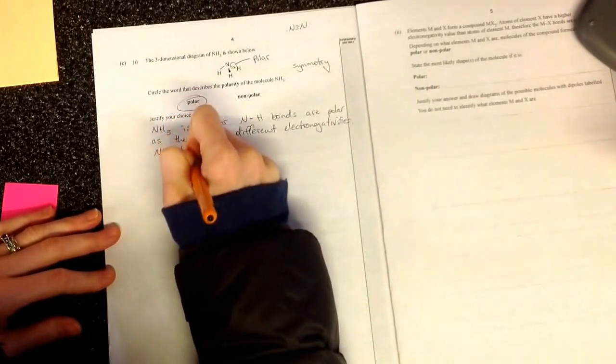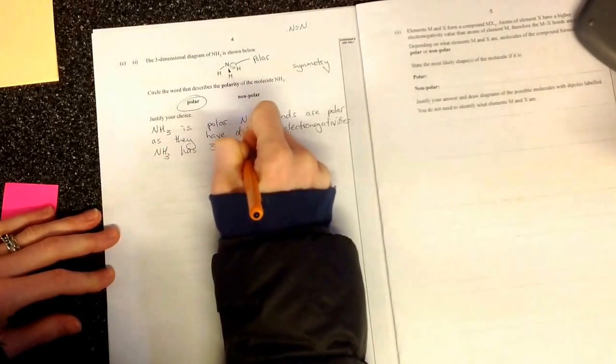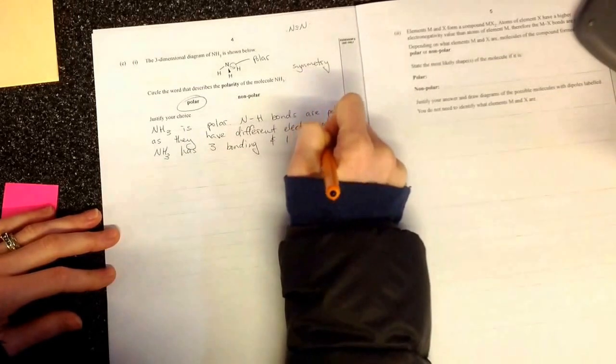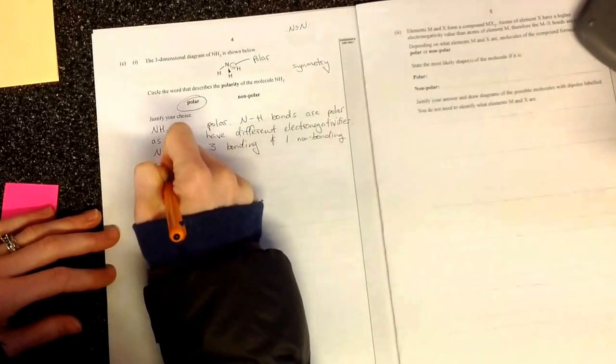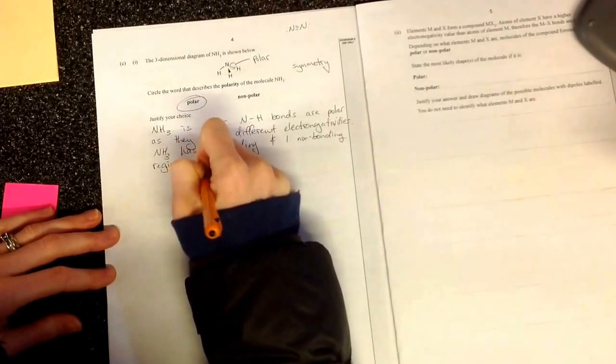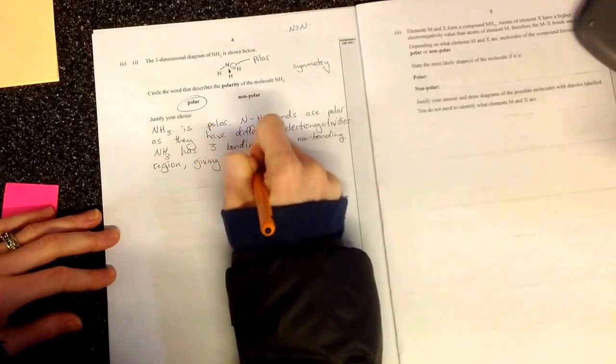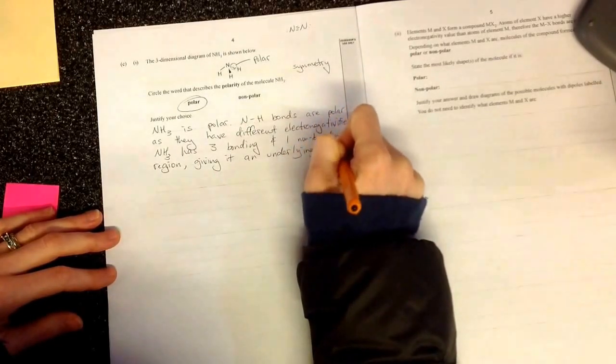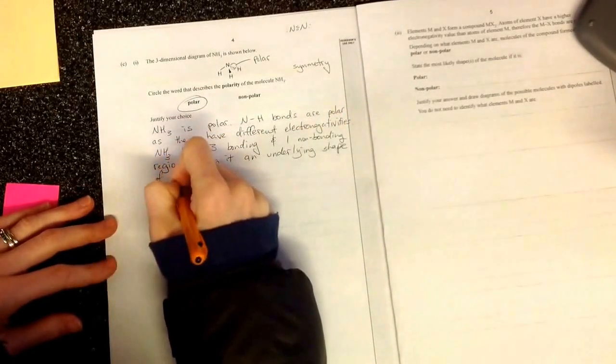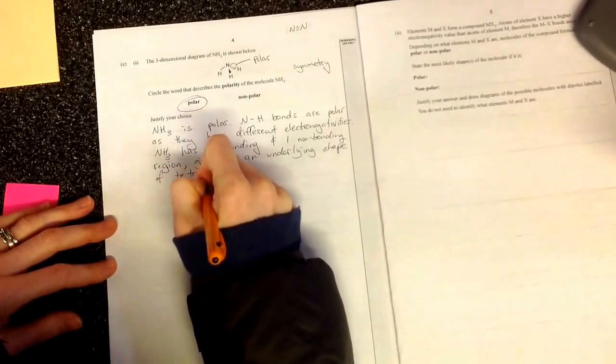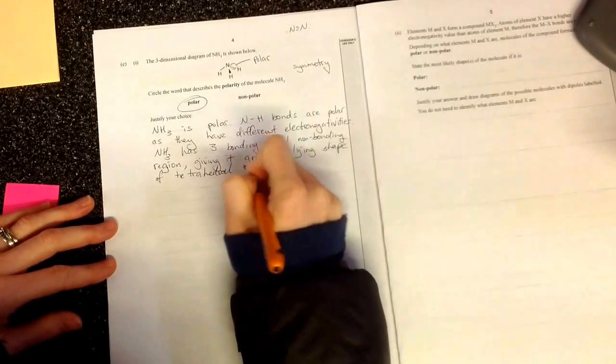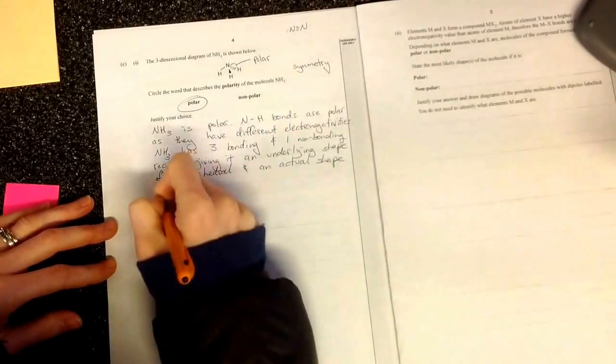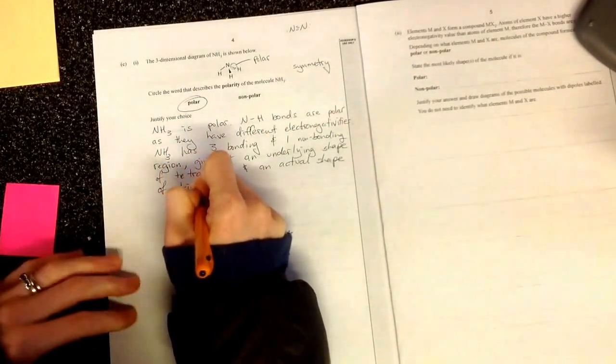Ammonia has three bonding regions and one non-bonding region, giving it an underlying shape of tetrahedral, excuse my English, and an actual shape of trigonal pyramid.